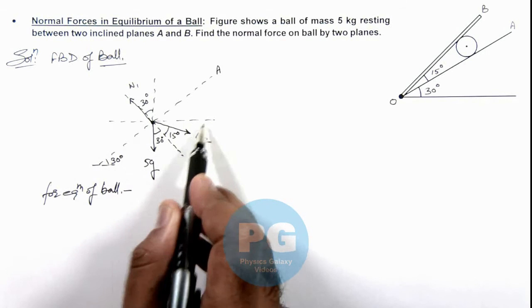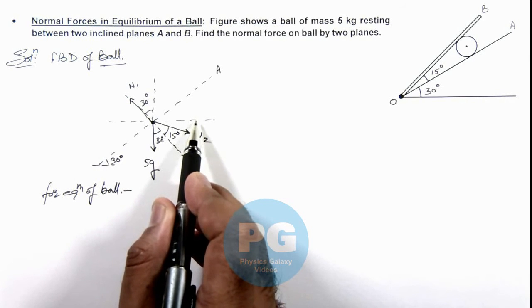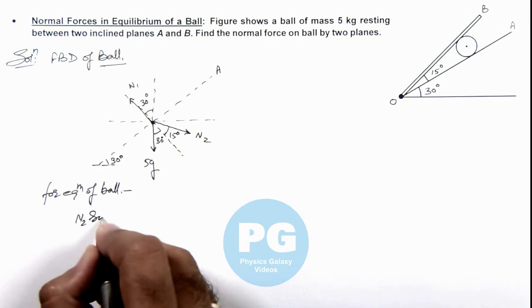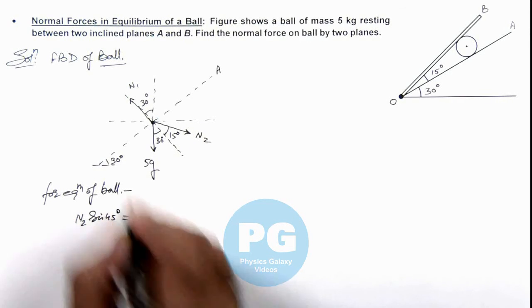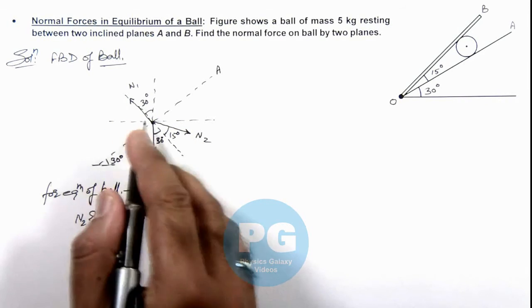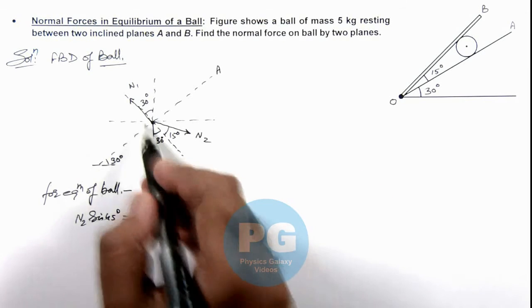The force is only the horizontal component of N₂, so this can be written as N₂ sin 45° that should be equal to N₁ sin 30°, that is the force acting on the ball toward left due to the normal reaction N₁.